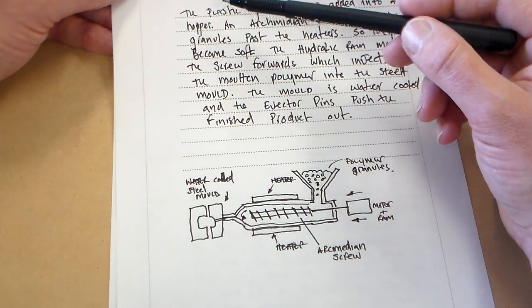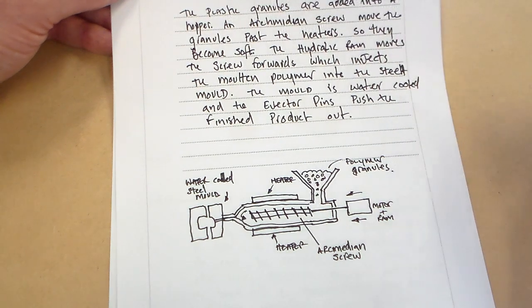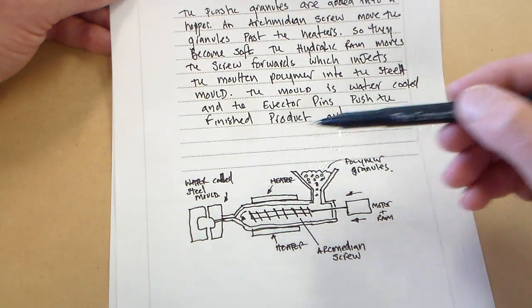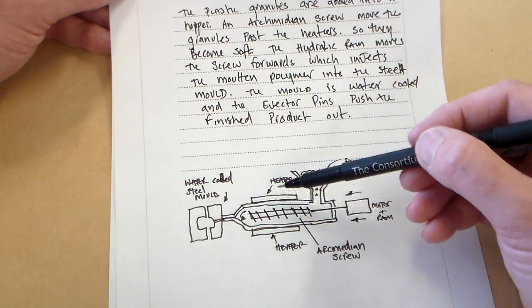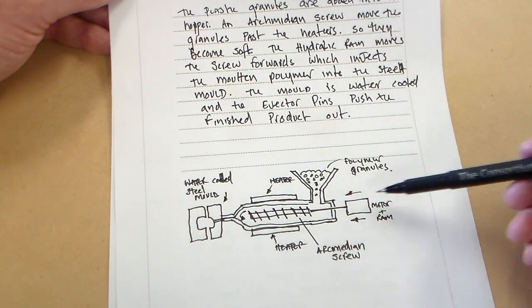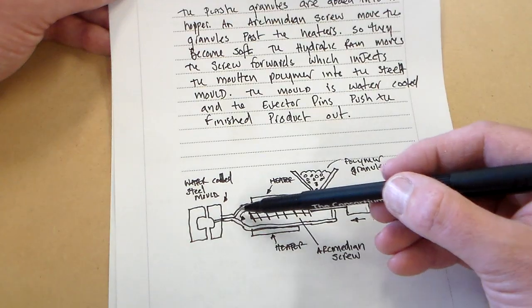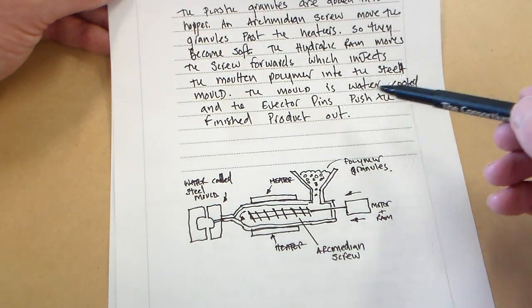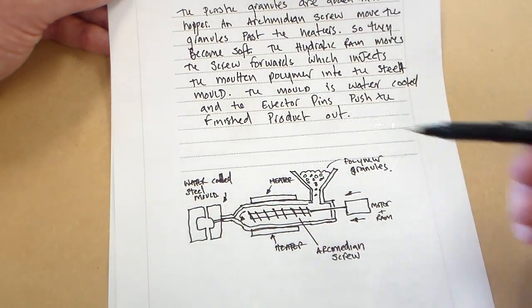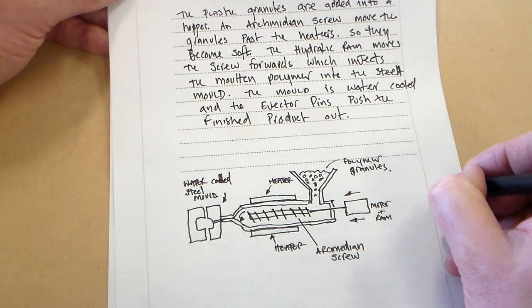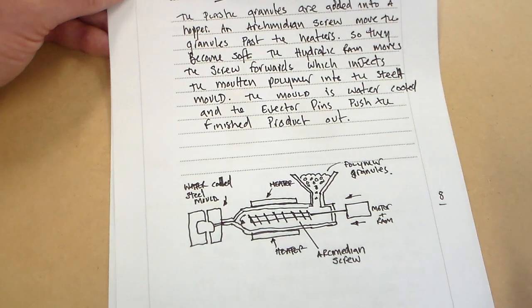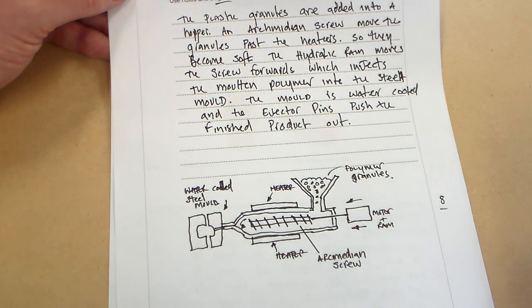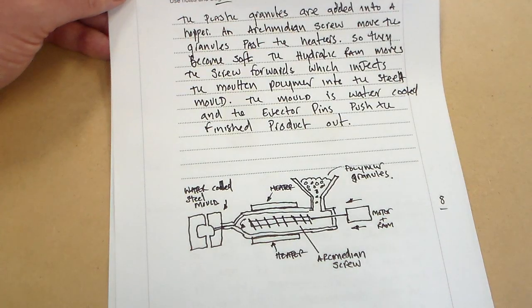And now if we go back to look at the notes. We can say the plastic granules are added into the hopper here. An Archimedean screw drives the granules past the heaters here and here. The hydraulic ram moves the screw forward which injects the molten polymer into the steel mold. The mold is water cooled and the ejector pins push the finished product out. And I think that's got to be good for eight marks. So there's the final bit of that question.